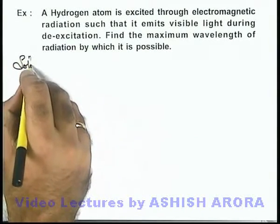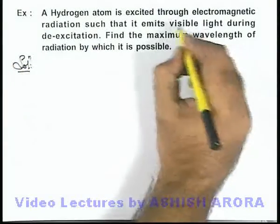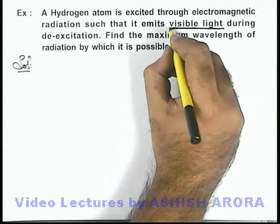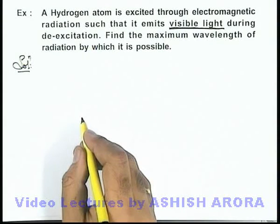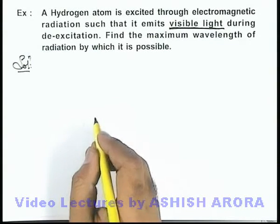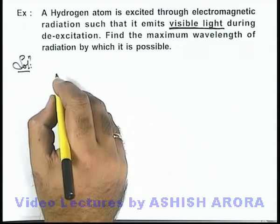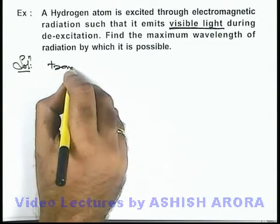Now here we can see we are given that during de-excitation hydrogen is emitting visible light, which happens only when the de-excitation is corresponding to Balmer series. That means whenever from any higher orbit electron makes a transition to n equal to 2, we can write.